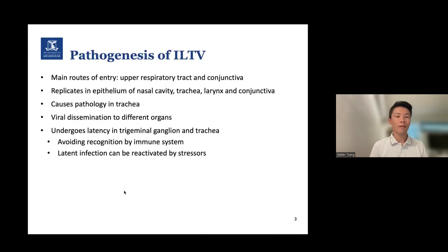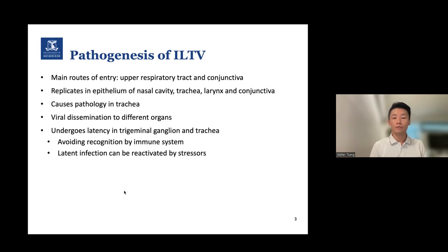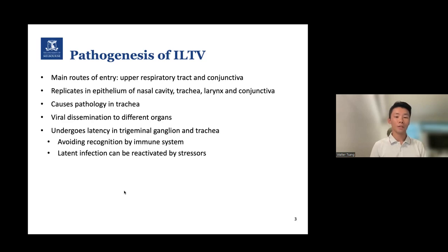Beyond the pathogenesis of ILTV, the main routes of entry in birds are the upper respiratory tract and conjunctiva. It replicates in the epithelium of nasal cavities, trachea, larynx, and conjunctiva, and causes pathology in the trachea. The virus can disseminate to different organs in infected birds, and it undergoes latency in the trigeminal ganglion and trachea. By undergoing latency, it avoids recognition by the immune system, and the latent infection can be reactivated by stresses.